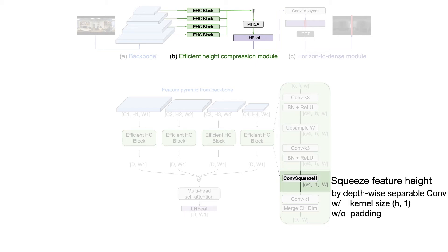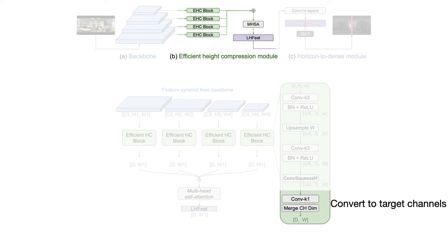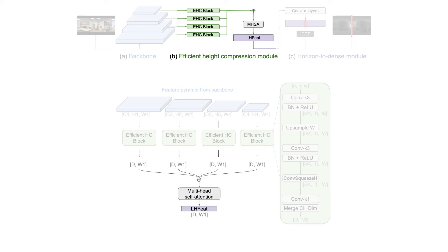To squeeze the feature height, we use a depth-wise separable convolution layer with its kernel size set to cover the full feature height, without padding. Finally, a convolution layer maps the feature to the number of target channels, and the height dimension of the feature is discarded as it has already become 1. The outputs from each EHC block are simply summed together and then fed into a 1D feature refinement layer to produce the final latent horizontal feature.